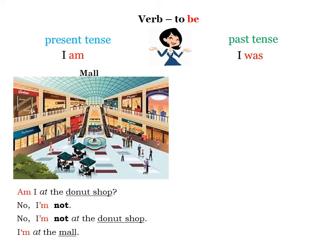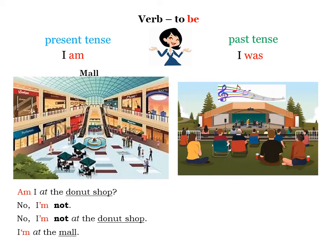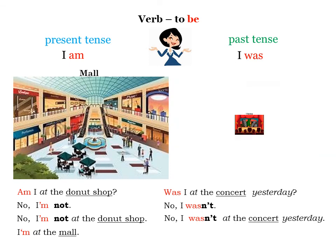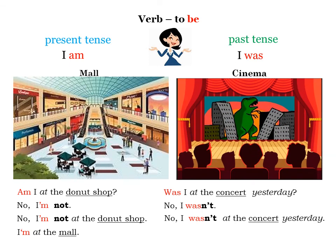Past tense: I was at the mall. Was I at the concert yesterday? No, I wasn't. No, I wasn't at the concert yesterday. I was at the cinema yesterday.